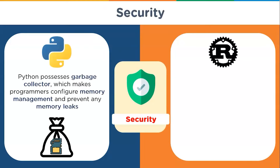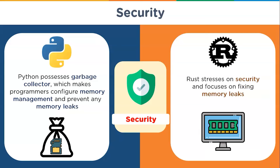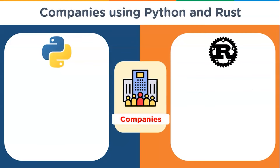Now let's check how secure these languages are. Python possesses a garbage collector which helps programmers manage memory and prevent memory leaks — it cleans up unnecessary memory while the program is running. Whereas Rust stresses on security and focuses on fixing memory leaks. It provides stack or heap to use during compilation time and clears memory when it's no longer required, eliminating the need to run a garbage collector constantly.